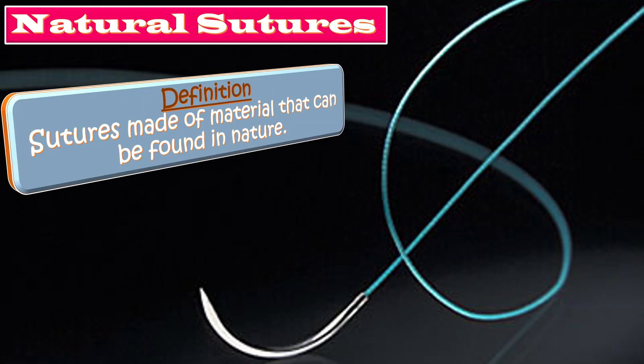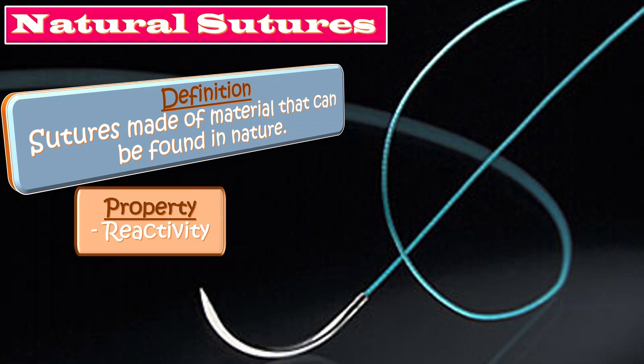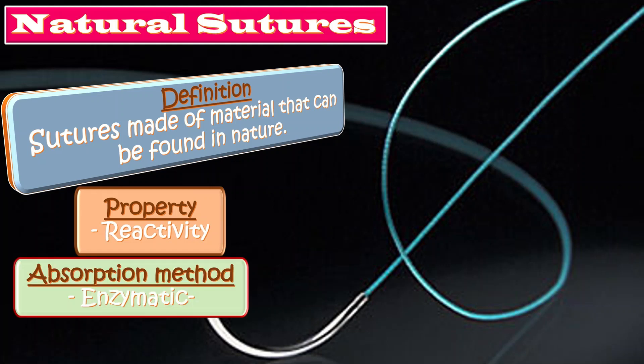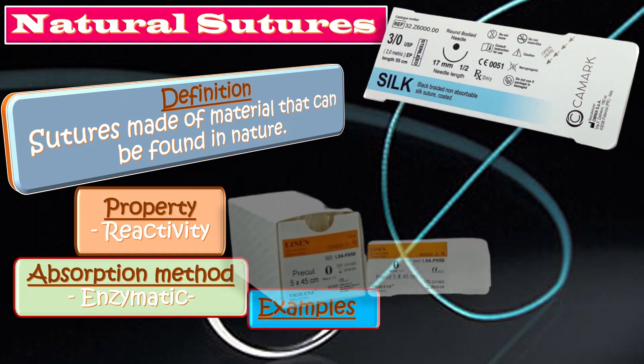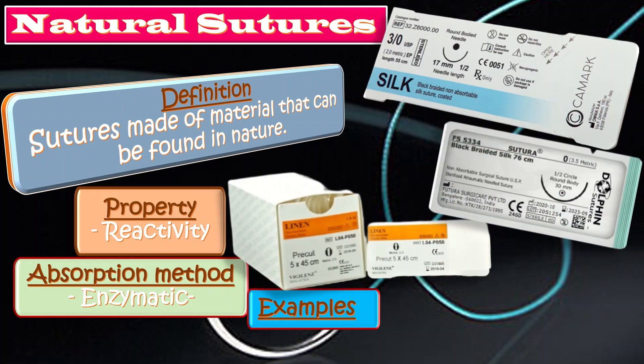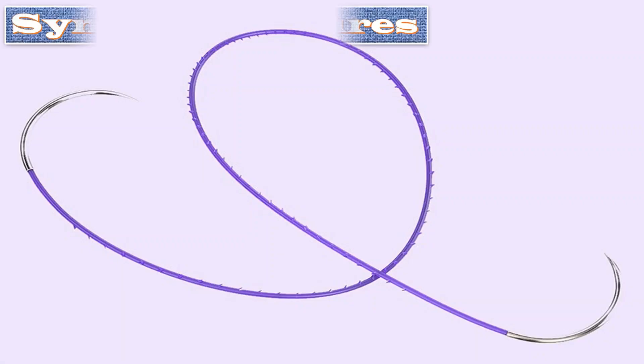Natural sutures are made from materials found in nature. Their properties include reactivity — the tissue response to foreign material — and an enzymatic absorption method, which is the chemical process of decomposition involving the breakdown of a substance by the body's enzymes. Examples include silk, linen, and catgut.